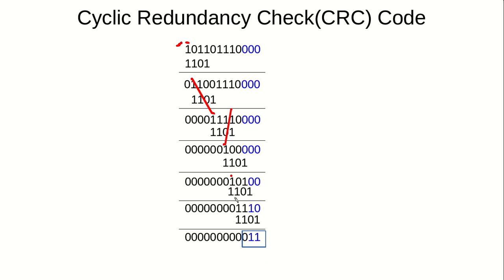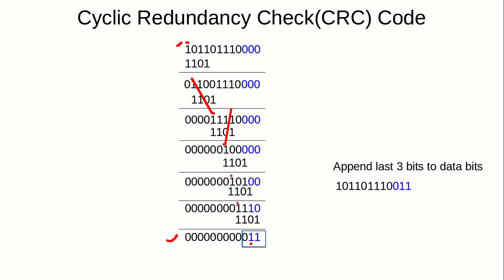After performing the final bitwise XOR steps, we search for the first one again. At this point we have fewer than four consecutive bits available, so we stop. We then append these last three bits to the original data — that is our redundant code.